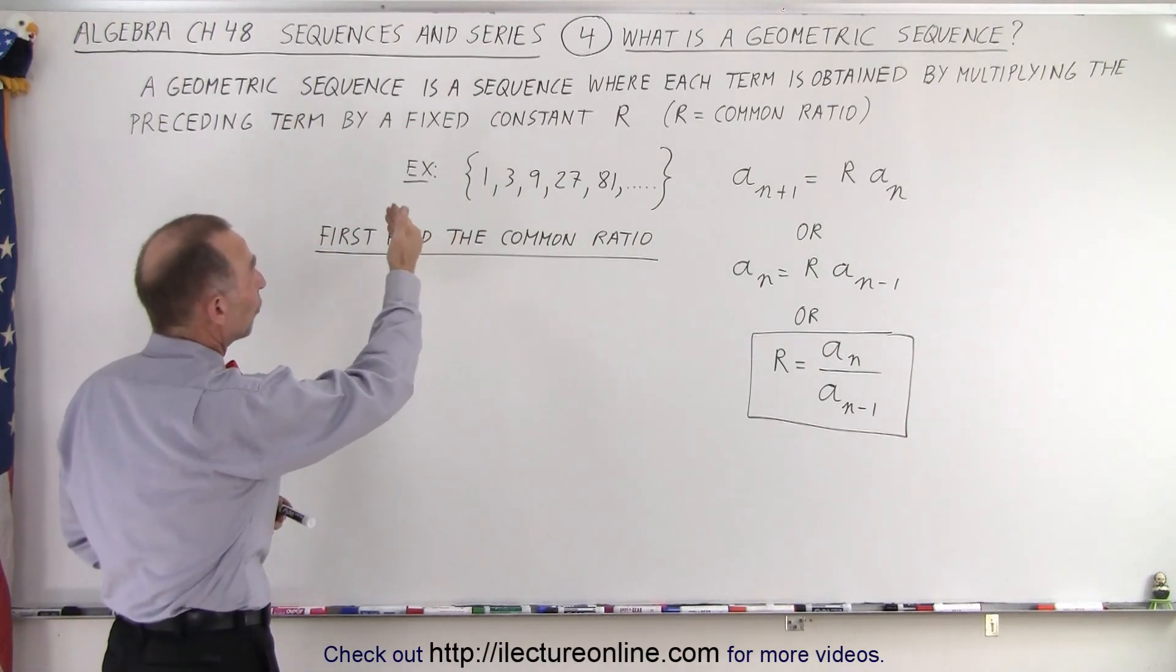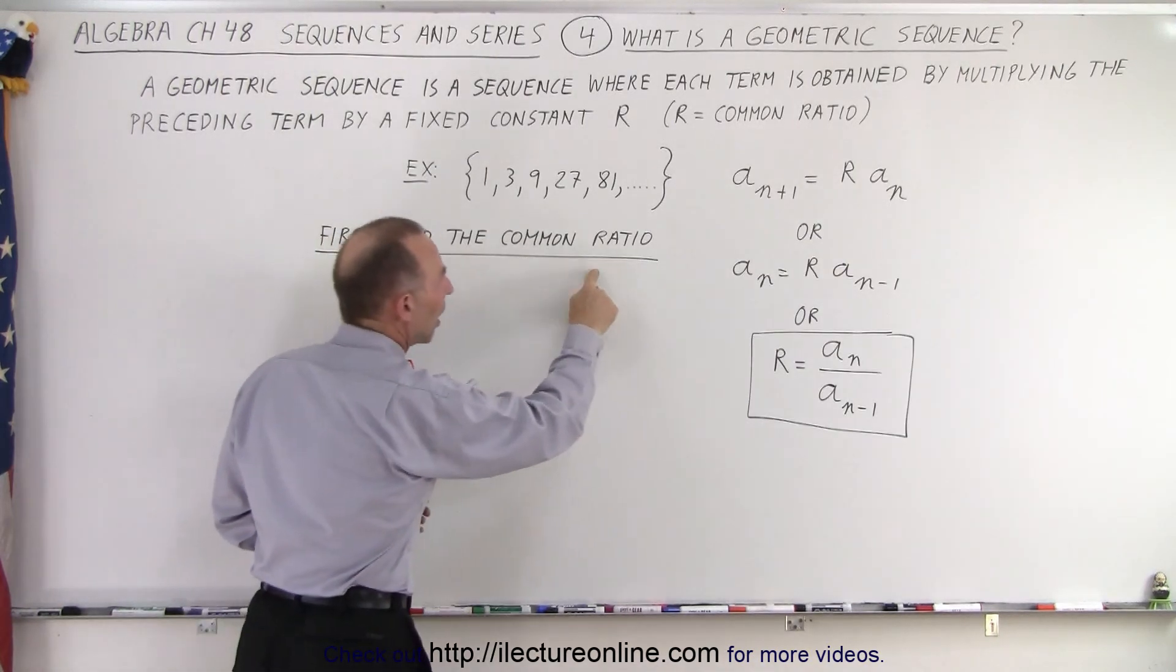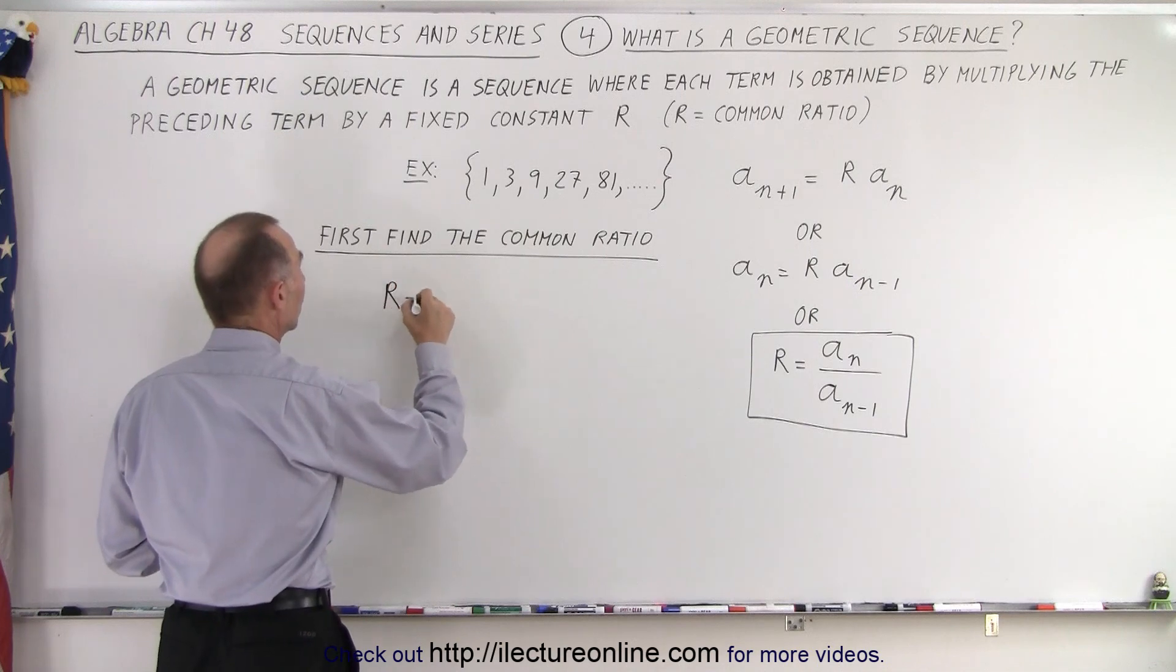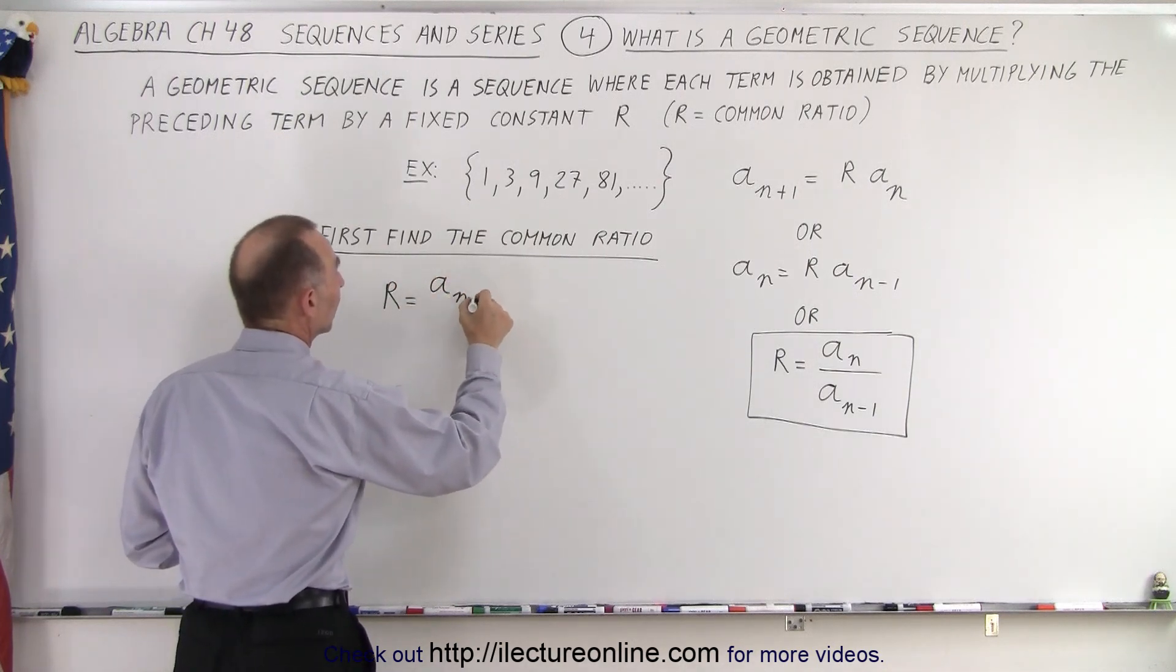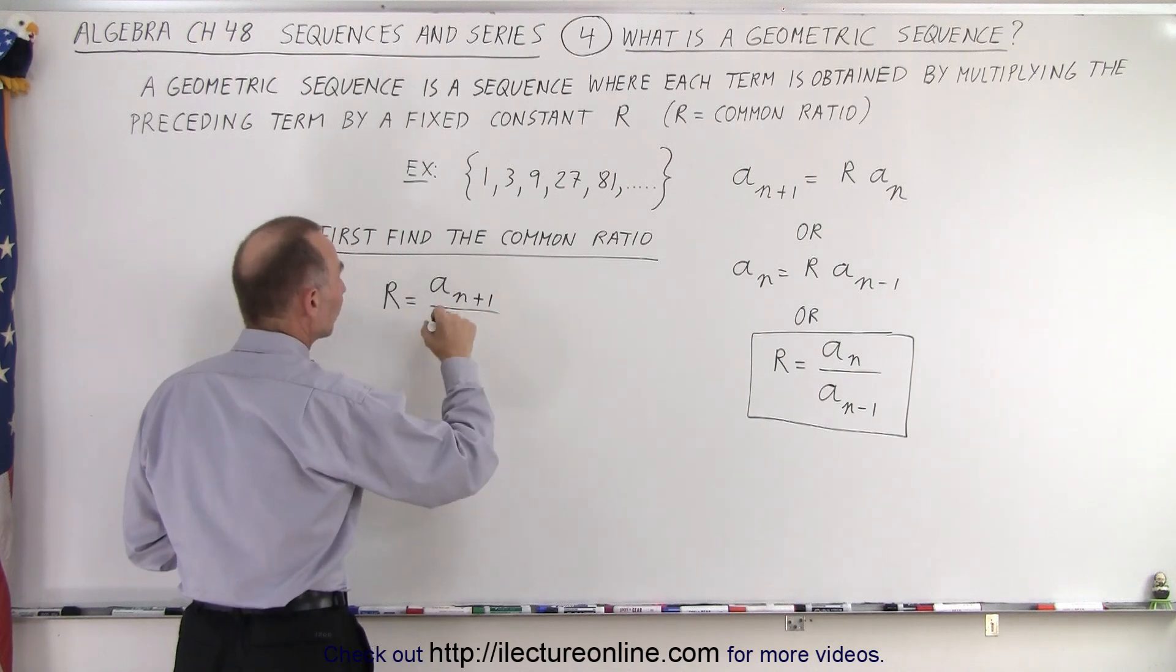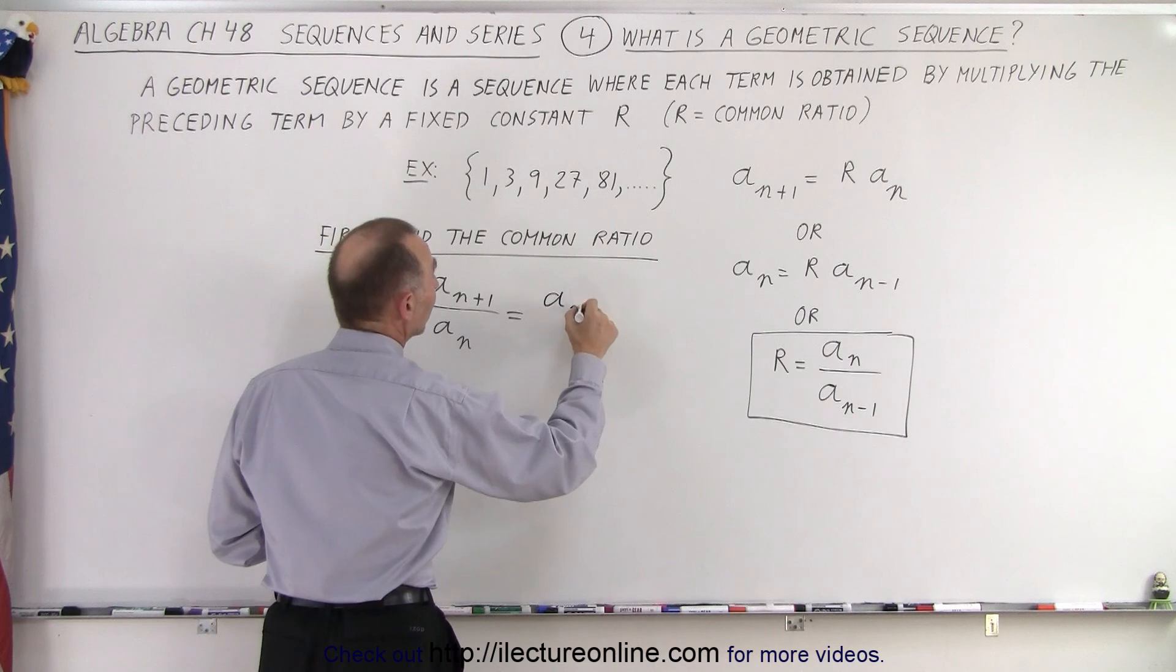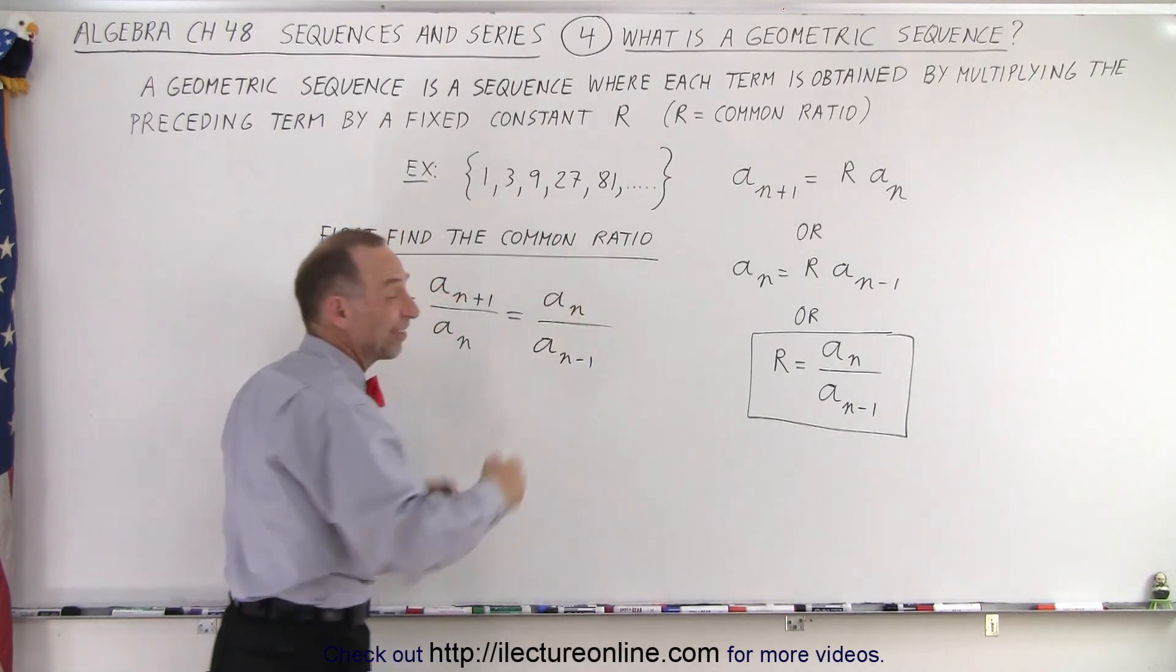Alright, so here we have an example, we have 1, 3, 9, 27, 81. So first we need to find the common ratio. So what we're going to do is, we're going to say that the common ratio is equal to the next number, a sub n plus one divided by the previous number, a sub n. Or it can be written as a sub n divided by a sub n minus one. It doesn't matter, it's the same thing.